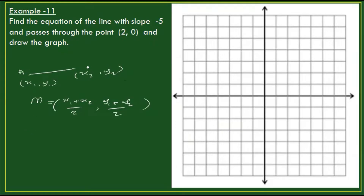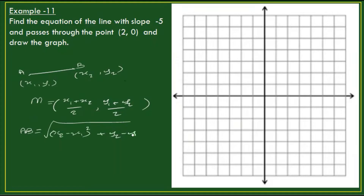The distance formula is equal to x2 minus x1, the whole square, plus y2 minus y1, the whole square, under the square root.